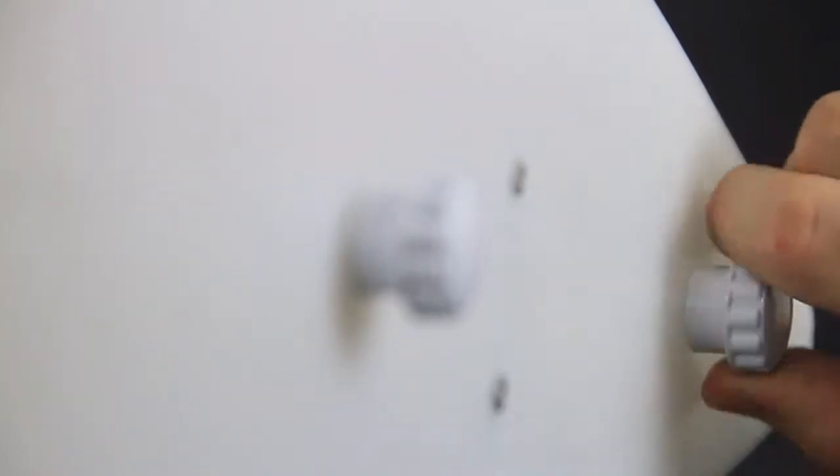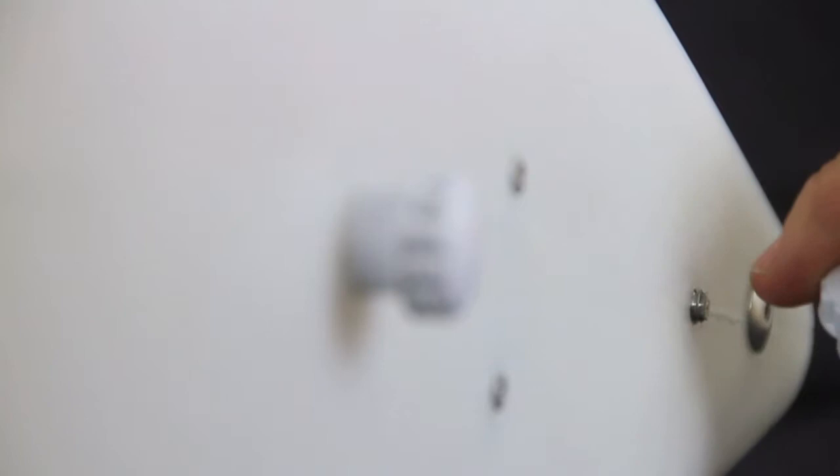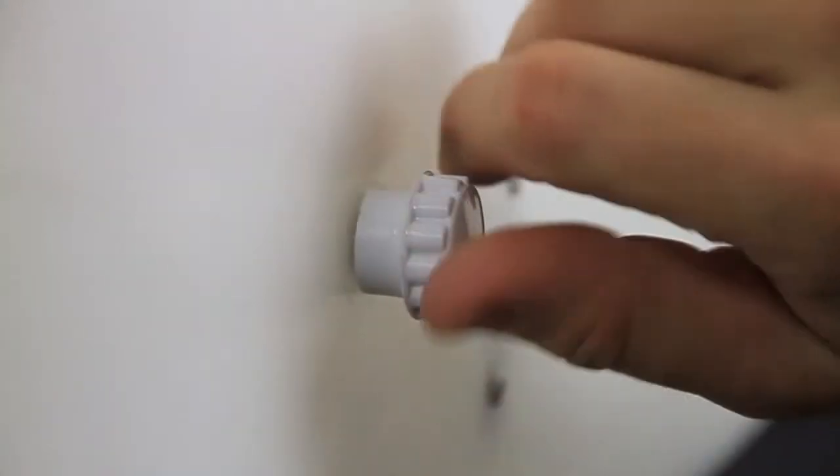Begin by removing the two white knobs located on the top of your bullet sign. In order to replace the light bulbs, you will first need to remove the sign from the metal bracket.